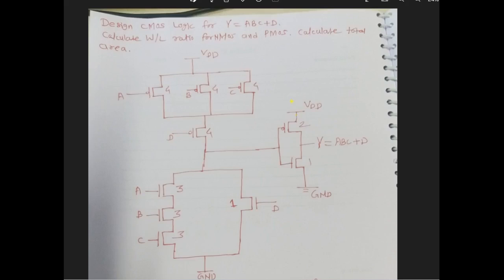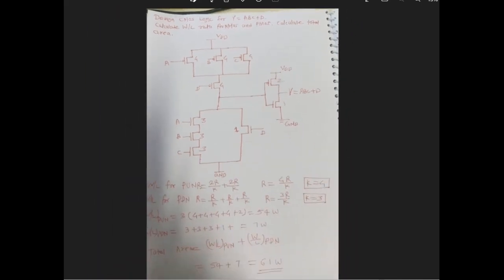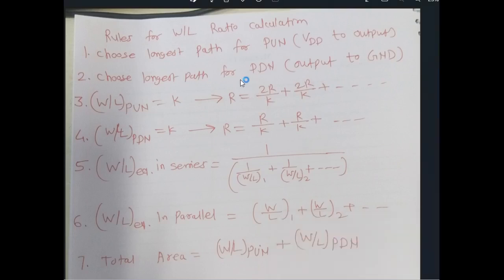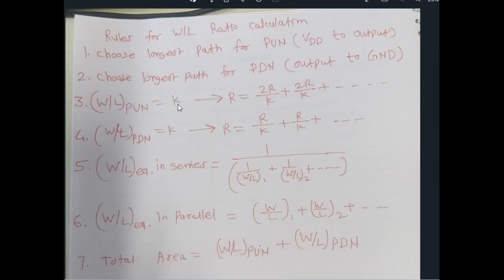To calculate the W by L ratio, we apply some rules. We choose the longest path for the pull-up network — the path originating from the power supply VDD to the output. For the pull-down network, the path goes from the output to ground. We must choose the longest path for both the pull-up and pull-down networks.